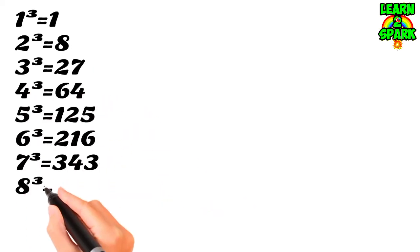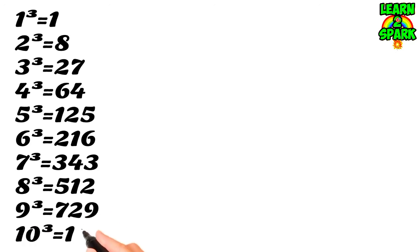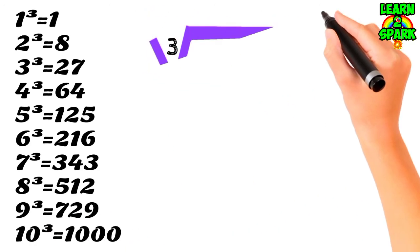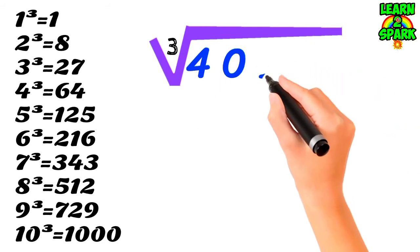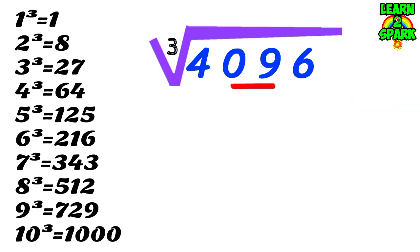Initially, you just write down the cubes of first 10 natural numbers before you start. Let's start with a 4-digit number. First, you have to split it up into 2 groups. The last 3 digits should be in one group and the remaining should be in another group.